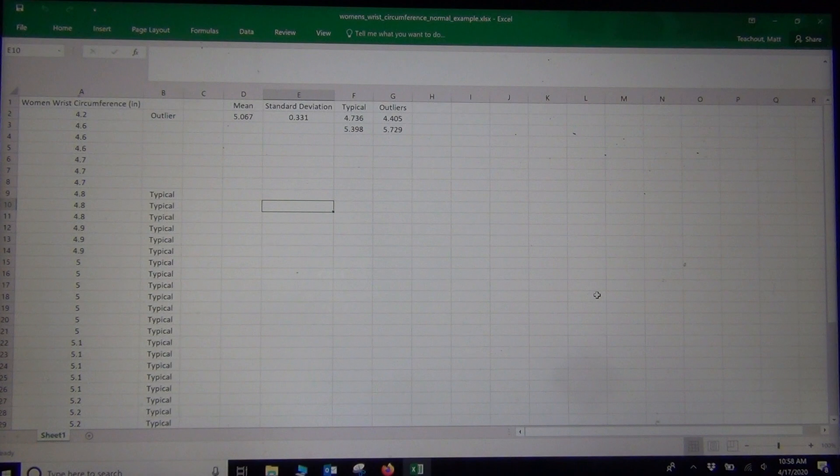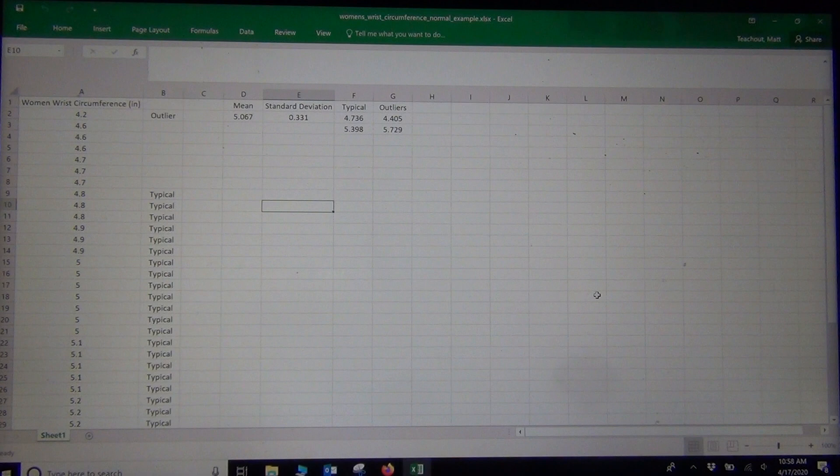So we're basically trying to figure out percentages that go along with normal quantitative data. Now the data we're looking at is an example we looked at in our last video, women's wrist circumferences, and we saw that it was normally distributed with a mean of 5.067 inches and a standard deviation of 0.331 inches.